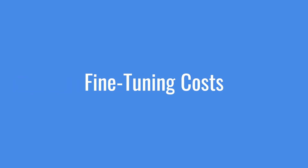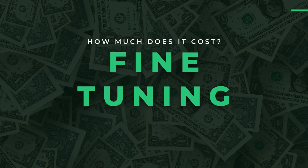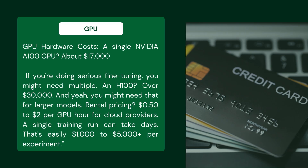The real costs. Fine-tuning costs — here's what everyone undersells about fine-tuning: it's expensive, not just in compute time, but in everything. GPU hardware costs: a single NVIDIA A100 GPU is about $17,000. If you're doing serious fine-tuning, you might need multiple. An H100? Over $30,000. And you might need that for larger models.